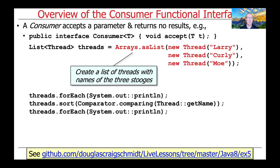We're going to take a look at an example now to make this very concrete. This example is something we've looked at before in the context of the Java Function Functional Interface. You can find this example in the EX5 folder in my Java GitHub repository. We're going to use the Arrays.asList factory method to create a list of thread objects that have the names of the various stooges — Larry, Curly, and Moe — stored in a list.